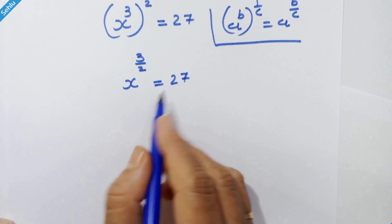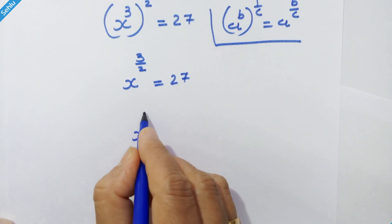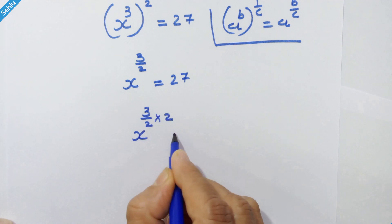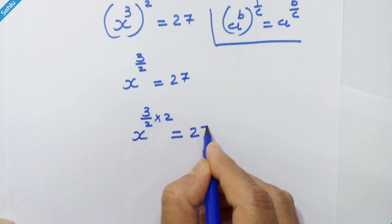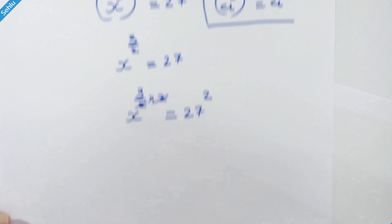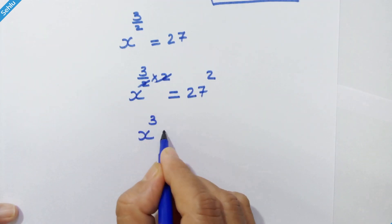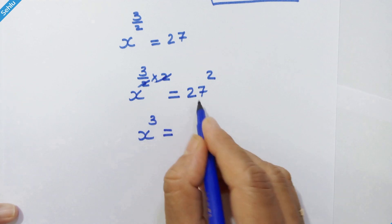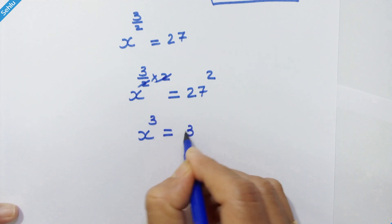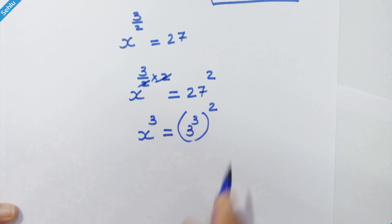Now we will square both sides. So we have x raised to 3 upon 2 into 2 is equal to 27 squared. This 2 will be cancelled. Our next step will be x cube is equal to — now 27 is 3 cube, so we can write it as 3 cube whole squared.